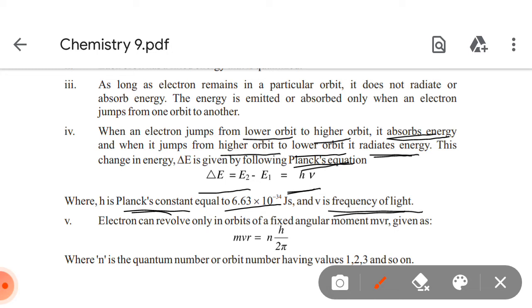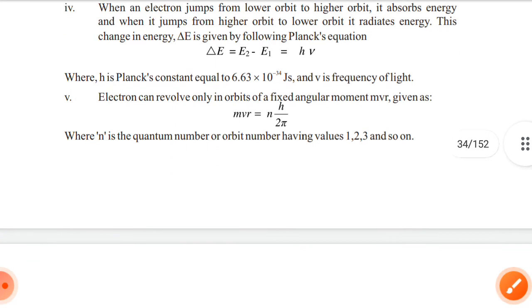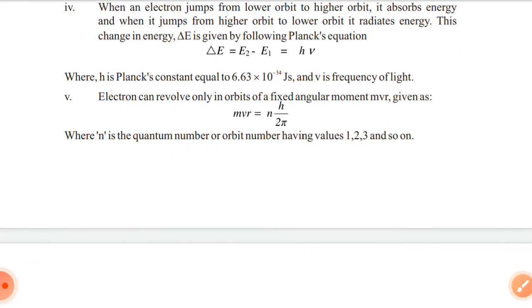Electrons can revolve only in the orbits of a fixed angular momentum MVR given as NH by 2 pi, where N is a quantum number or orbit number having the values 1, 2, 3 and so on.